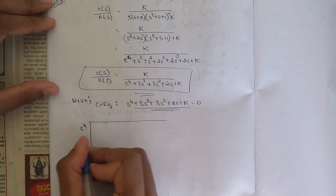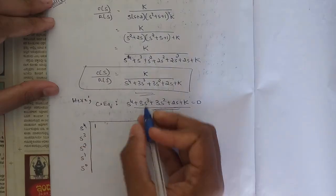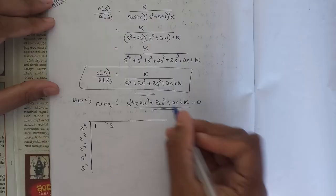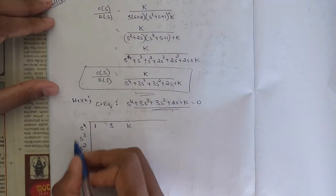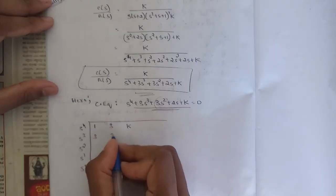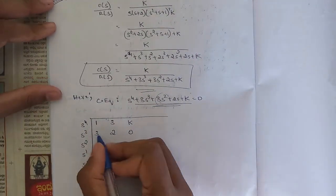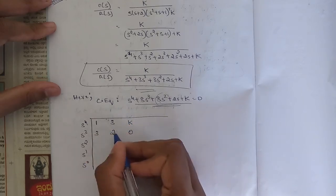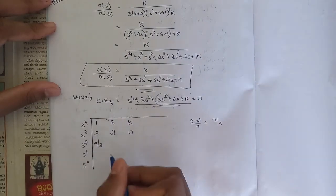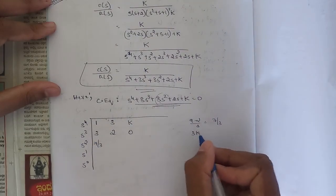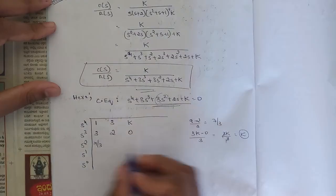Writing the Routh array from s⁴ down to s⁰: the s⁴ row has coefficients 1, 3, k; the s³ row has 3, 2, 0. For the s² row, compute (3×3 − 1×2)/3 = (9−2)/3 = 7/3, and the second element is (3k − 0)/3 = k.